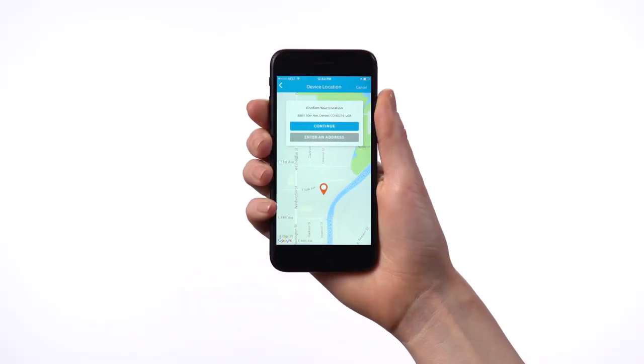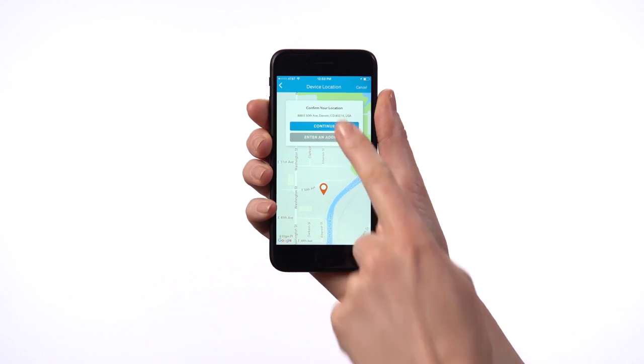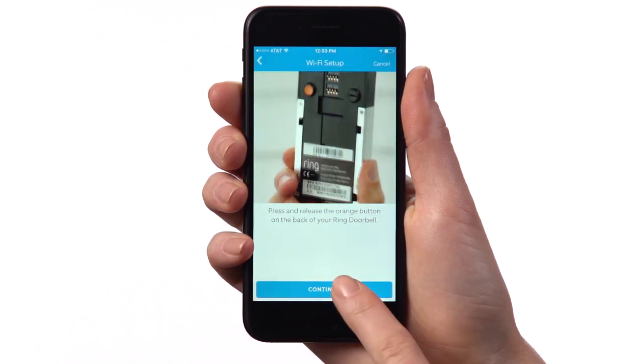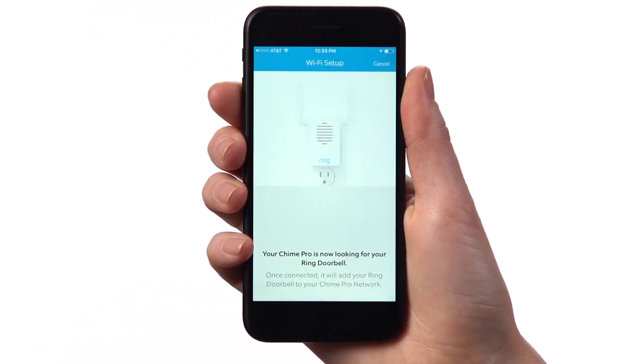When you set up a new Ring product for the first time, you'll see a screen that asks if you want to connect it to your Chime Pro network. Tap Yes, then follow the in-app instructions to complete setup. Note that you'll need to be near your Ring device during this process.